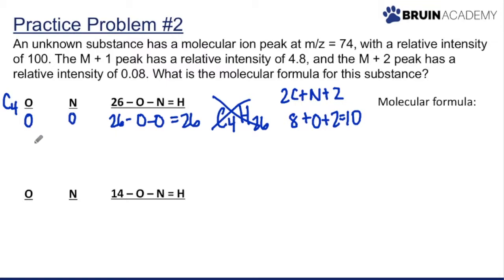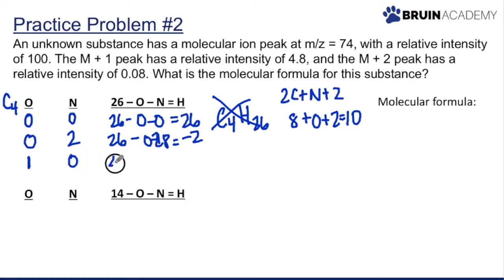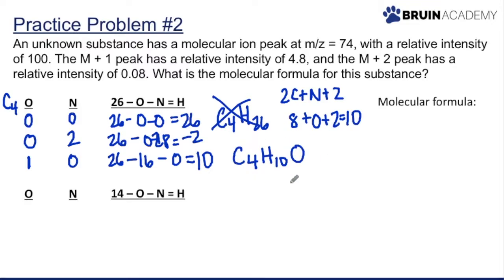Testing 0 oxygens and 2 nitrogens: 26 minus 28 = negative 2 — doesn't work. Testing 1 oxygen and 0 nitrogens: 26 minus 16 minus 0 = 10. This gives a molecular formula of C4H10O. The H rule gives 2×4 + 0 + 2 = 10, and 10 equals 10 — this works! So C4H10O is a potential molecular formula.